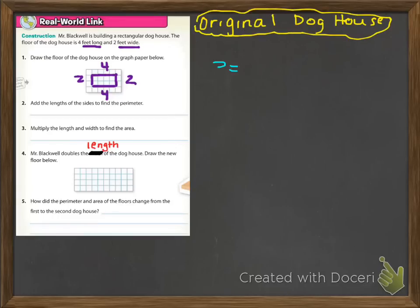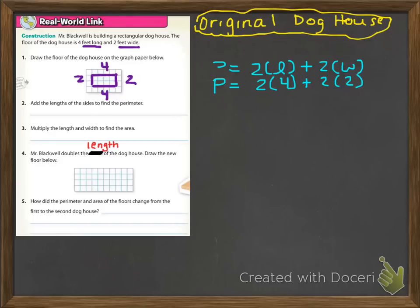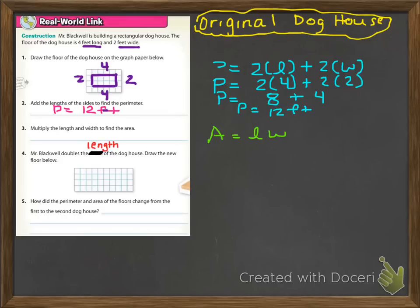Write 'original doghouse' and put a circle around it. Use the perimeter formula P equals two times the length plus two times the width, because you have two side lengths that are the same and two side lengths that are the same. Plug in the information: two times four plus two times two gives you P equals eight plus four, so P equals twelve feet. For area, the formula is A equals L times W. Plug in four and two: area equals eight feet squared.